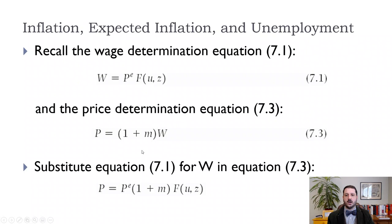So now what we're going to do is we're going to substitute in our equation for the wage, which is the expected price level times our function of the unemployment rate and our catch all variable z everything else that affects the labor market. And we're going to plug it into equation 7.3. And so we end up with our price level is equal to the expected price level times one plus the markup. So the markup is a measure of how much competition there is. Less competition will be a higher markup. More competition will be a lower markup times our function of the unemployment rate and z.